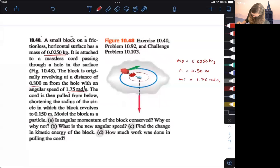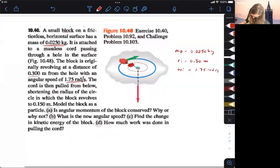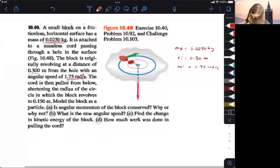The chord is pulled, and then shortening the radius, and then the block revolves with a new radius. So rf is equal to 0.150 meters.